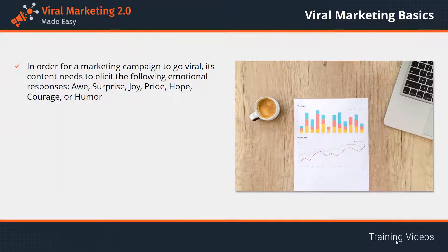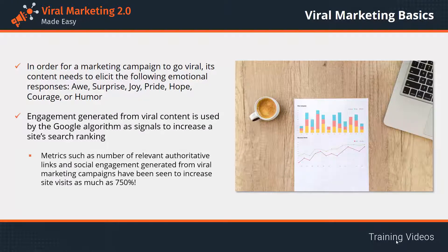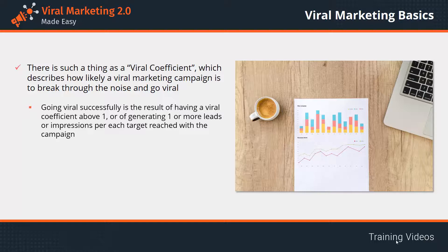Only campaigns using controversy in a positive way have gone wildly viral, such as Kleenex's 'Unlikely Best Friends' campaign. For a marketing campaign to go viral, its content needs to elicit the following emotional responses: awe, surprise, joy, pride, hope, courage, or humor. Engagement from viral content is used by Google's algorithm to increase search rankings. Metrics such as authoritative links and social engagement from viral marketing campaigns have been seen to increase site visits by as much as 750%. There is also such a thing as a viral coefficient.